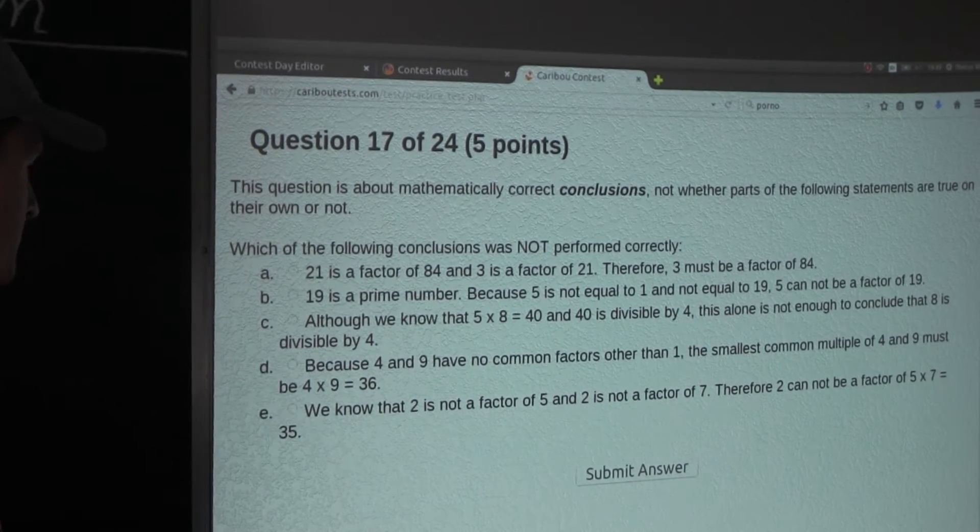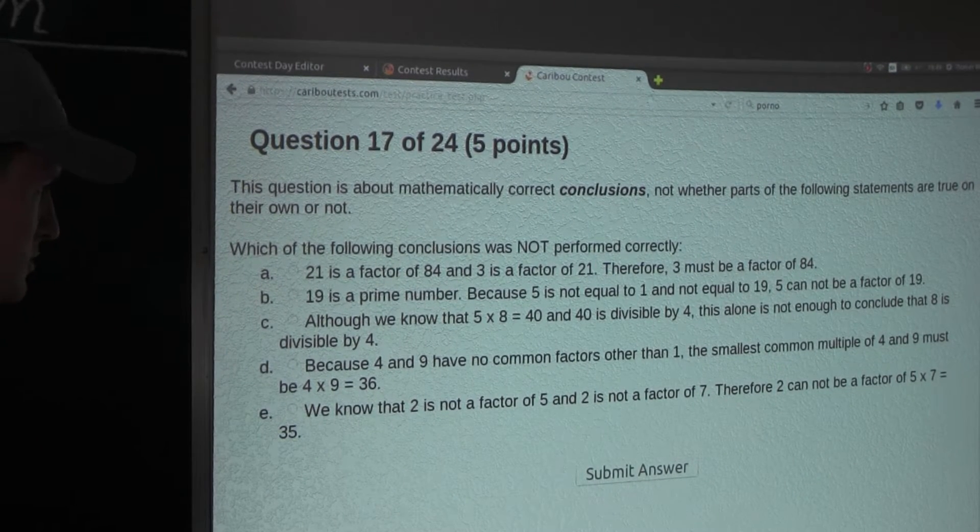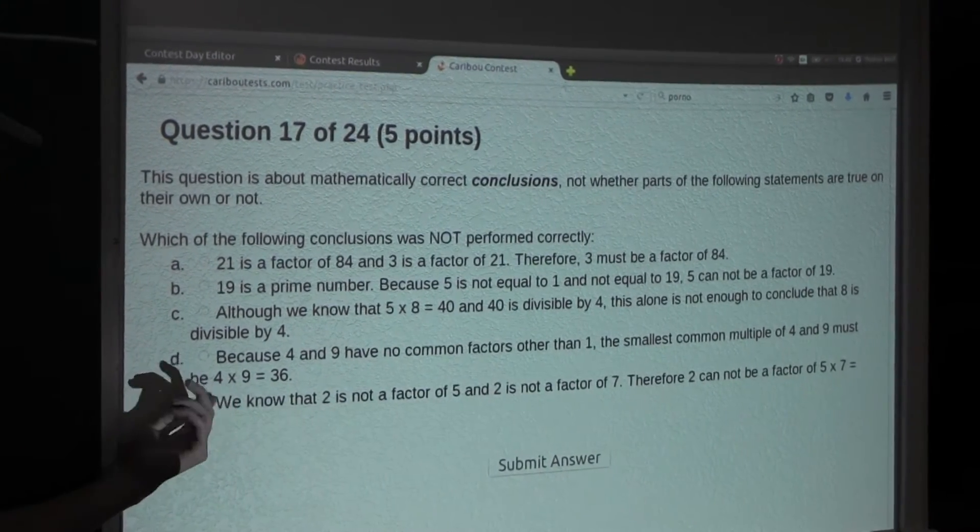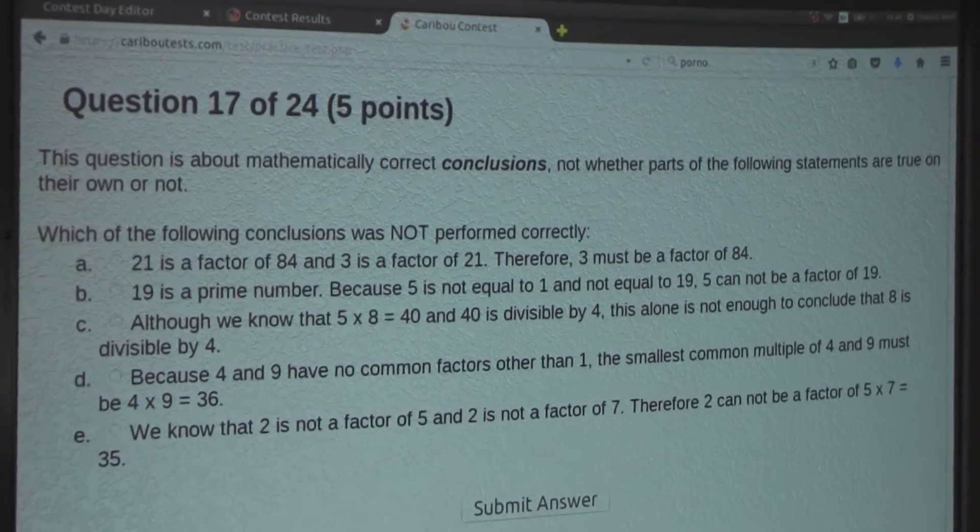Okay. Now, option D. Because 4 and 9 have no common factors other than 1, the smallest common multiple of 4 and 9 must be 4 times 9 equal to 36.